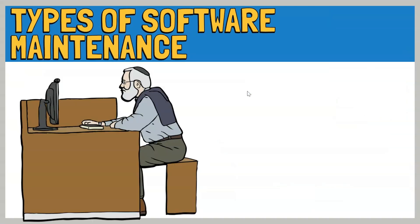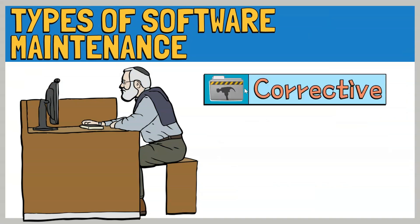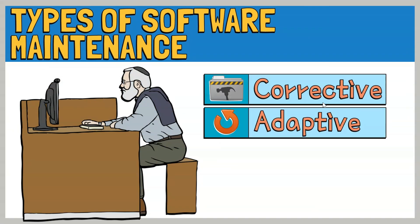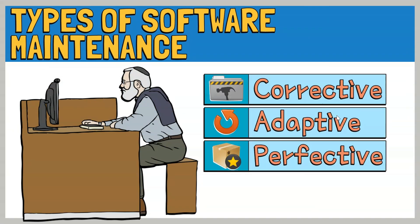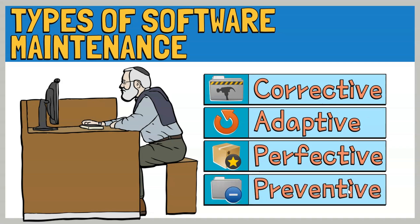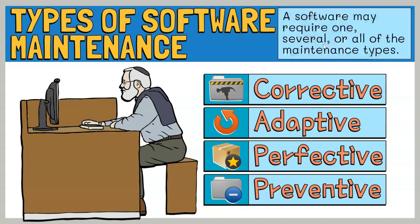The four types of software maintenance are corrective maintenance, adaptive maintenance, perfective maintenance, and preventive maintenance. Each type serves different purposes, and a software may require one, several, or all of these maintenance types throughout its life cycle.